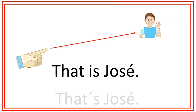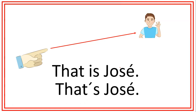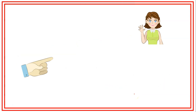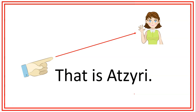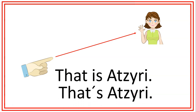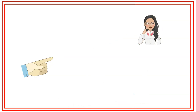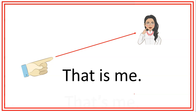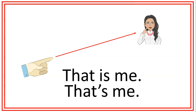También podemos utilizar that para identificar personas que están a una distancia larga. Por ejemplo, that is José, or that's José. Recuerden que cuando presentamos personas no utilizamos la palabra a. Solamente decimos that is José o that's José. Veamos algunos otros ejemplos: that is a city, that's a city, that is me, or that's me.